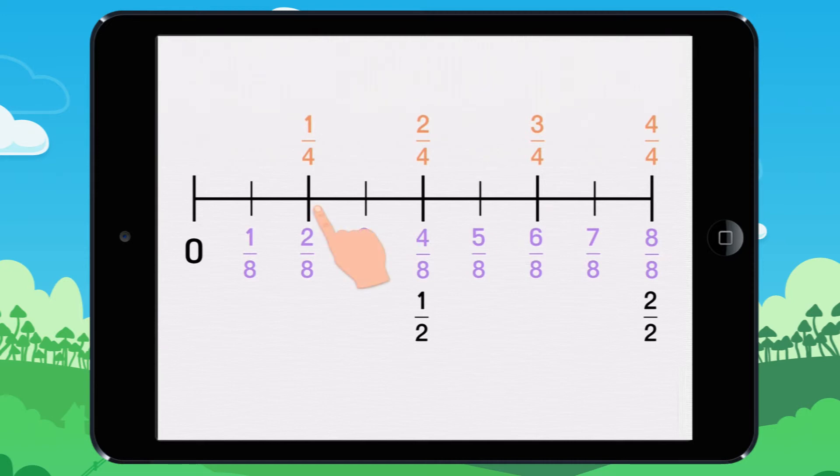One quarter equals two eighths. Two quarters equals one half which equals four eighths. Three quarters equals six eighths.